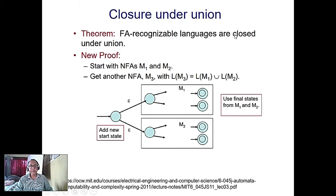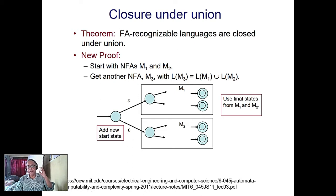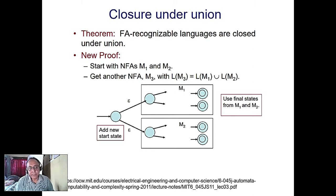For closure under union, if you take two finite state machines and form their Cartesian product, the result is also a regular language. The final state is either f₁ or f₂ from the two machines.